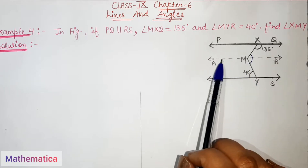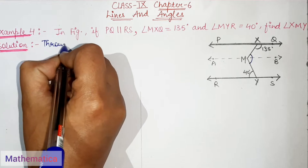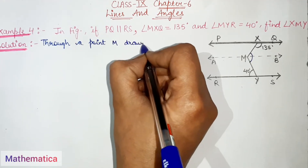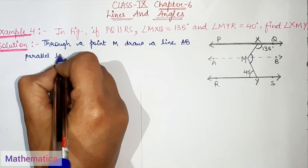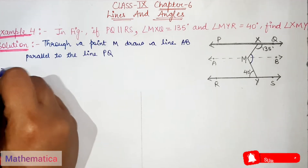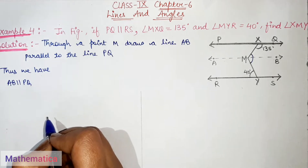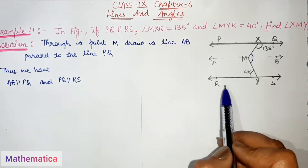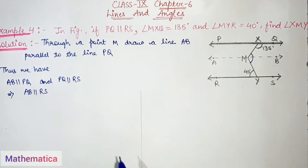We are doing a construction — drawing a line AB from point M. Through point M, draw a line AB parallel to line PQ. Thus we have AB parallel to PQ. And since PQ is parallel to RS, this implies AB is parallel to RS as well.